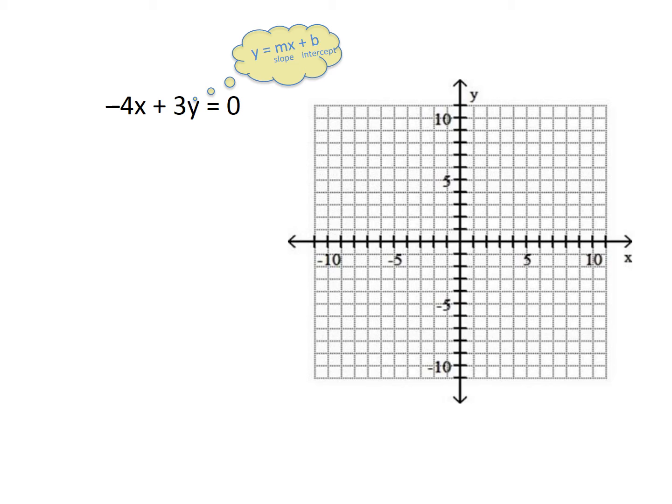The big thing about slope-intercept form is you have to solve for y, so that's what we're going to do first. We're going to write the original equation down and zoom in on that equal sign. Y has to be by itself on the left side; we want everything else on the right-hand side.